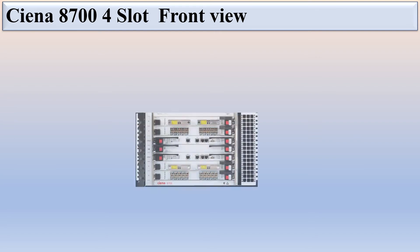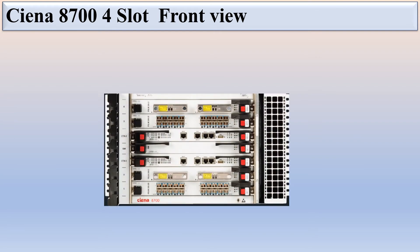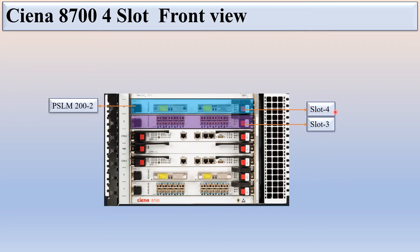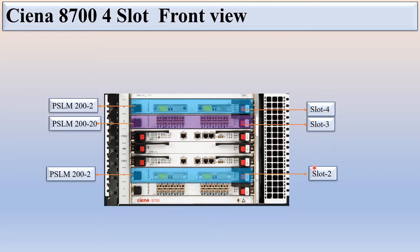In this video we will discuss the CNI 8700 4-slot. This is the CNI 8700 4-slot front view. The upper slot is slot 4, below slot 4 there is slot 3, and below that is slot 2.